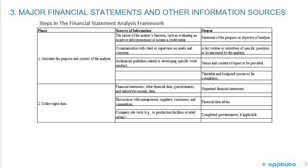For step two — collecting input data — sources of information include financial statements, other financial data, questionnaires, industry or economic data, discussions with management, suppliers, customers, and competitors, and company site visits. The output would be organized financial statements, financial data tables, and completed questionnaires, if applicable.